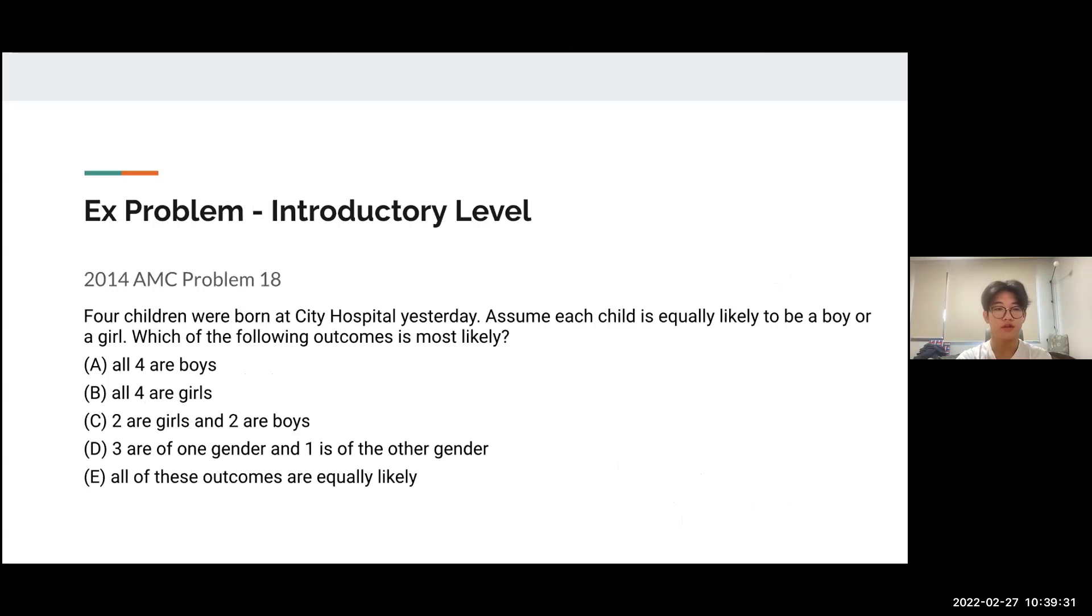I'm going to start solving the example problem, which is introductory level. This is 2014 AMC 8 Problem 18. The question is: four children were born at City Hospital yesterday. Assume each child is equally likely to be a boy or girl. Which of the following outcomes is most likely? Option A: all four boys. Option B: all four girls. Option C: two are girls and two are boys. Option D: three are of one gender and one is of the other gender. Option E: all of these outcomes are equally likely.